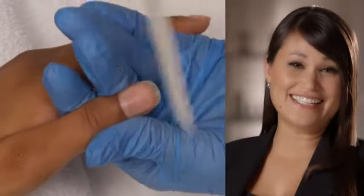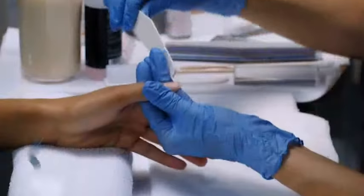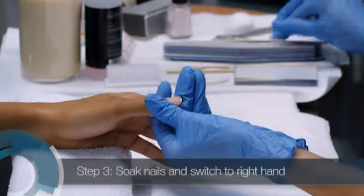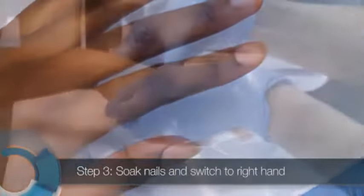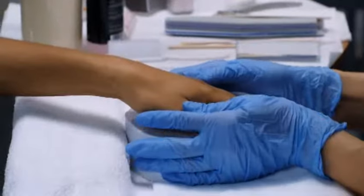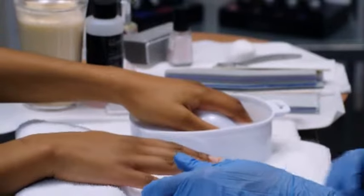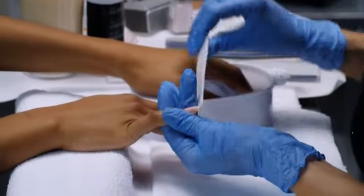Never use a sawing back and forth motion to file the natural nail as this can disrupt the nail plate layers and cause splitting and peeling. Now that you're done filing the left hand, you want to let it soak while you're working on the right hand. Soaking the fingertips will soften the eponychium, the living skin on the posterior and sides of the nail, and the cuticle, which is the dead tissue that's adhered to the nail plate. Soaking the fingertips makes the cuticle easier to remove.